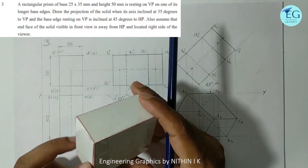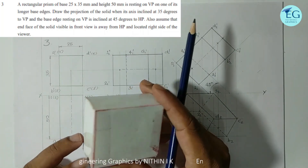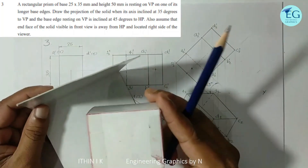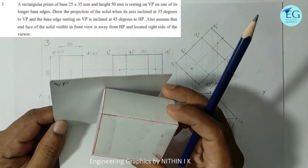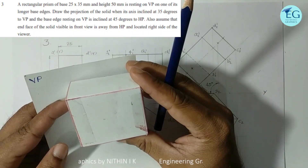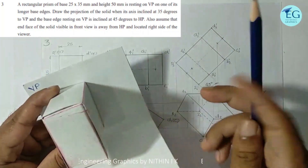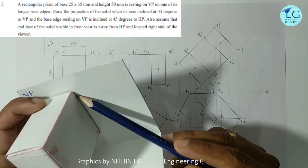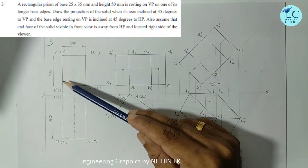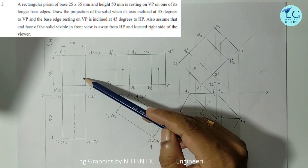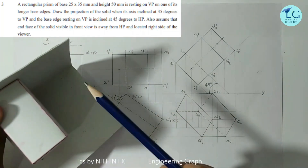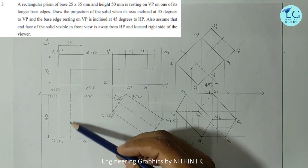Since we want to identify the longer edge, between 25 and 35, we select 35mm as the longer edge. The initial setup involves the XY line touching the top view, with the axis visible in the top view. This gives us a 25×50mm reference for the initial position.